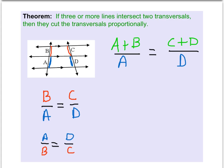We could write A plus B. In other words, the entire length of that transversal between the two parallels. A plus B over A is equal to C plus D over D. So that's a possibility. And again, we can also write its reciprocal, just like we wrote the reciprocal here.